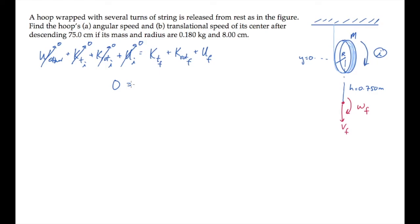In the final state, we can relate the two things we're asked for using the expression vf equals r omega f, which holds because the hoop rolls without slipping on the string.